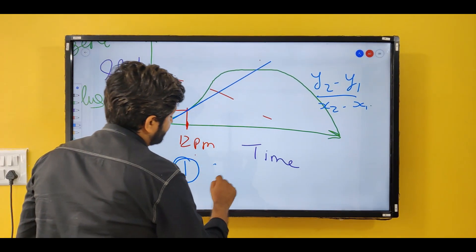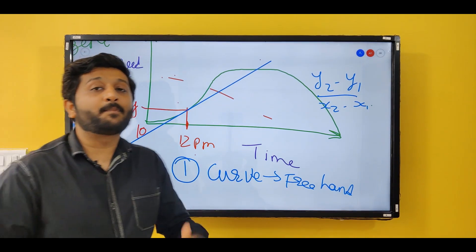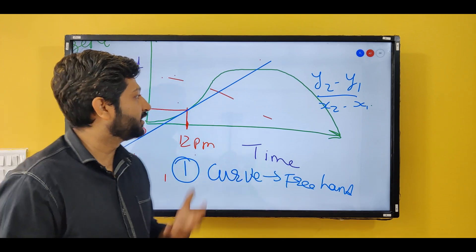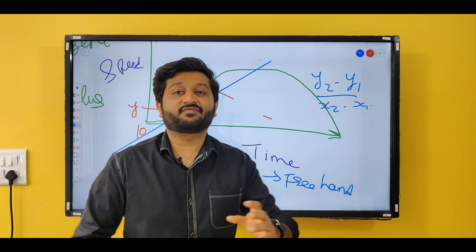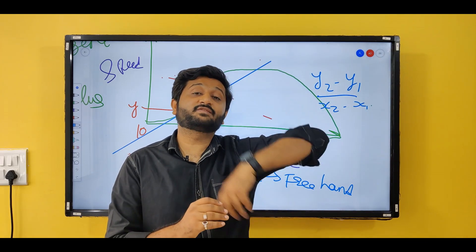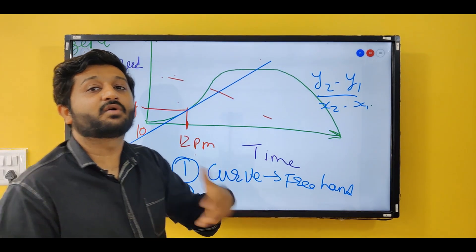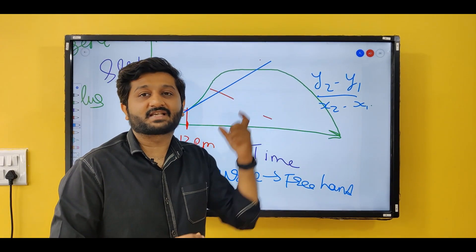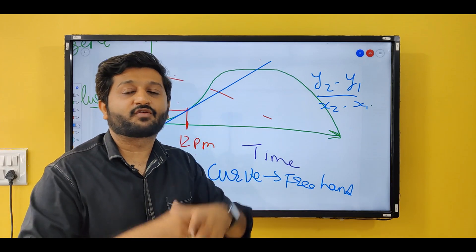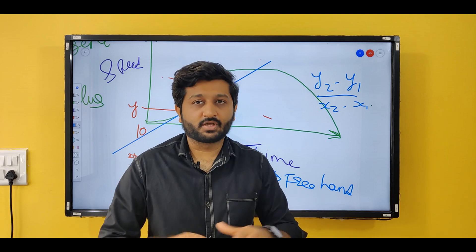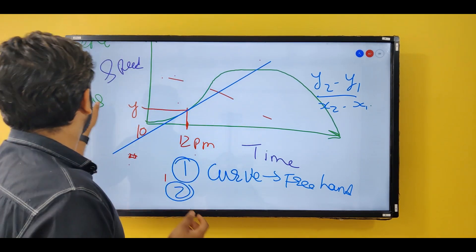Problem one: I have drawn this curve by hand, so it is a freehand curve and not accurate. Problem two: if the journey is 36 hours, 72 hours, or three days long, I'll have to draw the graph for the entire duration and then find the tangent — and the gradient answer may vary from person to person. So technically this is not the correct way.